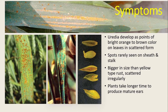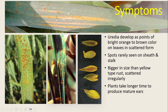In this presentation you can see that uredinia develop as points of bright orange to brown color on leaves in a scattered form. You can observe the scattered pattern on the leaves and leaf sheath.